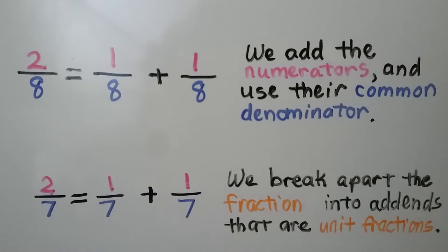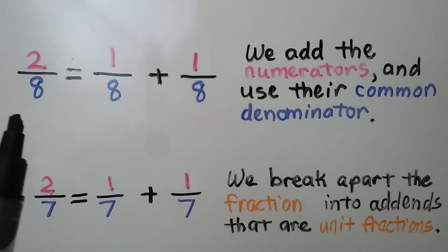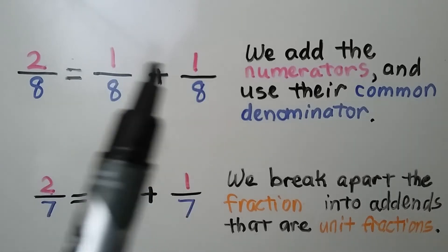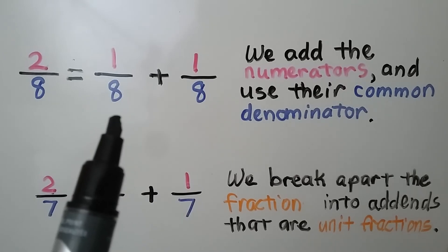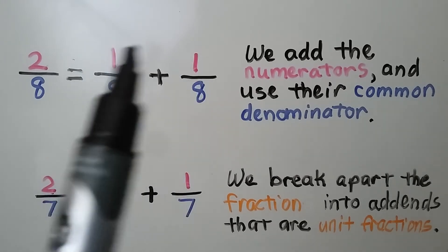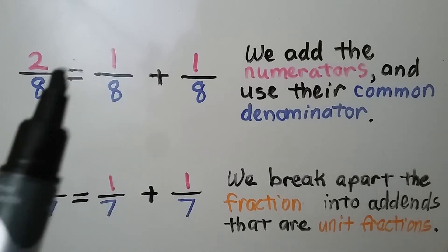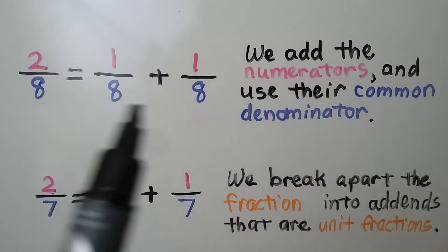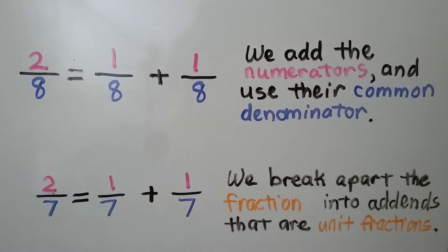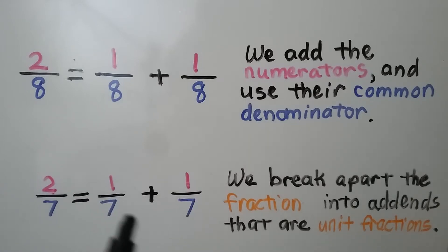So let's see what that means. It means that we can write a fraction like 2 eighths as a sum of fractional addends with like denominators. The sum of the numerators — 1 plus 1 of these addends — is the numerator, the 2. And the denominators are all the same. We add the numerators and use their common denominator. We break apart the fraction, like 2 sevenths, into addends that are unit fractions.